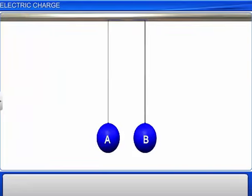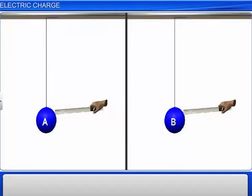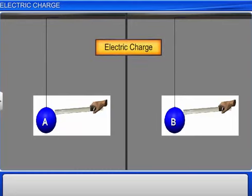The physical quantity responsible for all these phenomena is known as electric charge. Electric charge can be defined as the property of matter that exhibits its electrostatic interaction with other matter.